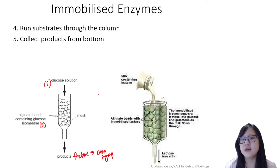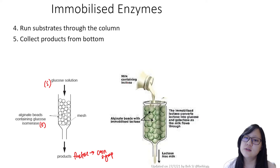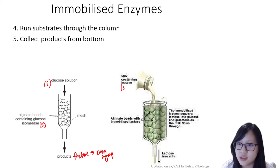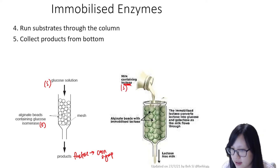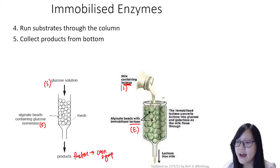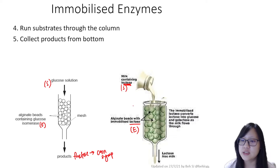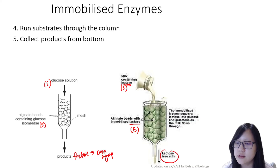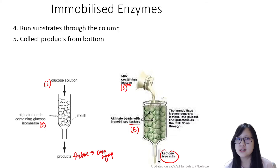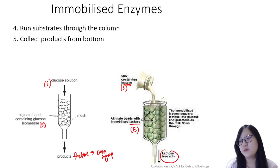Another example involves milk. Milk containing lactose is the substrate — specifically, lactose is the substrate — and the enzyme used is lactase, which is immobilized in the alginate beads. Milk containing lactose is poured through the top of the column, and what comes out is lactose-free milk, allowing lactose-intolerant people to consume it.